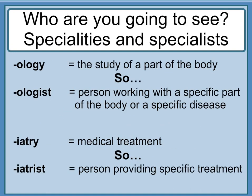Who are you going to see? Specialties and specialists. '-ology' is the study of a part of the body, so '-ologist' is a person working with a specific part of the body or a specific disease. '-iatry' is medical treatment, so '-iatrist' is a person providing specific treatment.